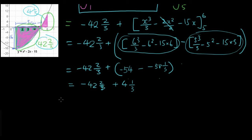We are going to get rid of all this. Now we are going to say area equals the absolute value of -42⅔. Absolute value just means turning the negative into a positive, plus 4⅓.